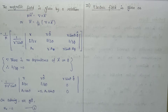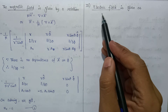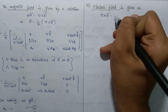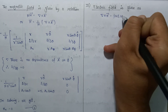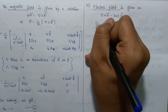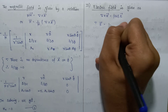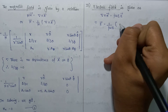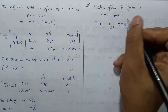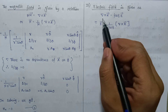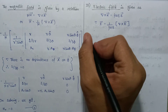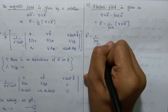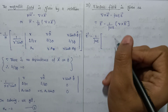Now let's move on to step three: calculation of the components of the electric field. The electric field is given by the relation del cross H equals j-omega-epsilon times E vector, so E vector equals 1 over j-omega-epsilon times del cross H. Let's calculate the curl of H.